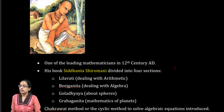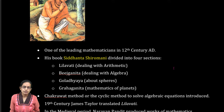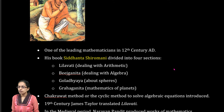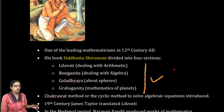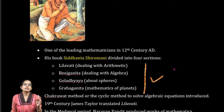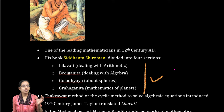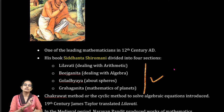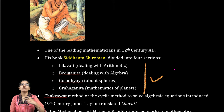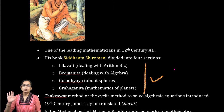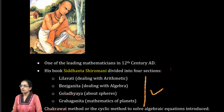The next major mathematician is Bhaskaracharya, whose book is known as Siddhant Shiromani, divided into four important sections. Leelavati, the first volume, focuses on arithmetic or Anka Ganit. Beach Ganit, the second volume, focuses on algebra. Gola Dhyay talks about spheres and the concept of spherical shape. Graha Ganit talks about the mathematics of planets.